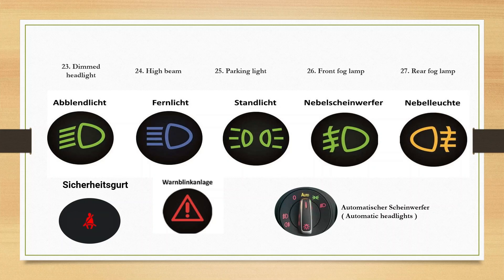Nebelscheinwerfer is your front fog lamp, Nebelschlussleuchte is your rear fog lamp, Sicherheitsgurt is your seat belt, one blink and lag is your hazard lights, and automatisches Licht is your automatic light.